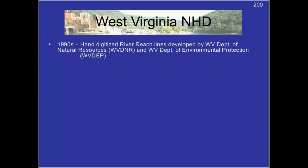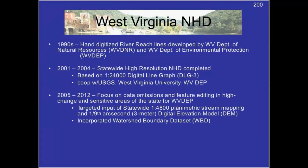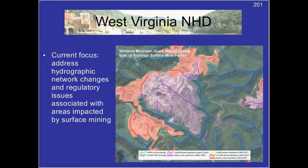In today's talk, Dr. Samuels will be talking about West Virginia. Hydrography data for West Virginia was first digitized in the 1990s. By 2004, the high-resolution NHD was completed for the state. In the 2005 to 2012 timeframe, NHD data at 1-to-4,800 scale resolution was produced. From 2013 to 2016, the NHD was being used in the development of StreamStats. The current focus of the NHD for West Virginia is the changing hydrography associated with surface mining.